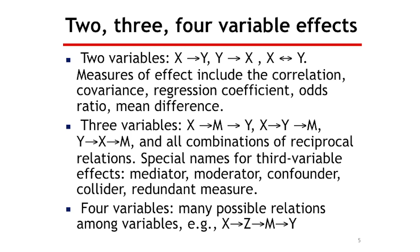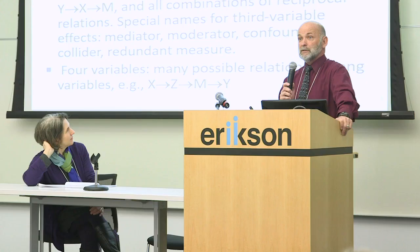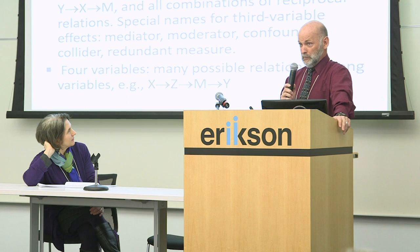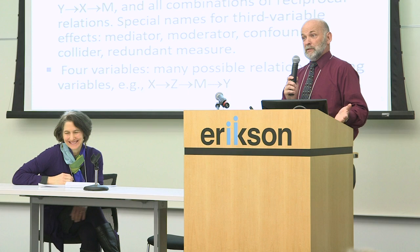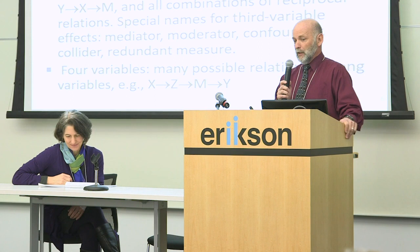With four variables, there are lots of different possibilities — X to Z to M to Y, Y to M to Z, and so on. With five variables, there are so many possible models it's hard to track. But things in the real world have lots of variables and we need to understand those to improve child and family health. Typically what we do is pick parts of those models and try to understand them as well as we can, including mediation.